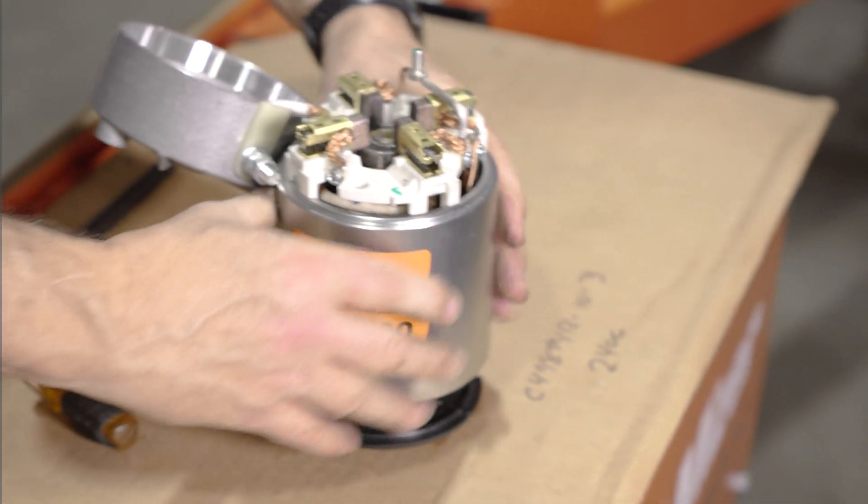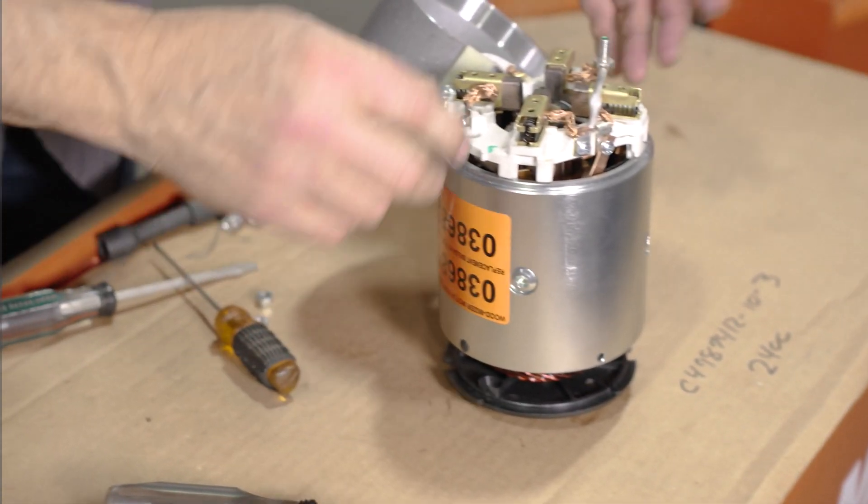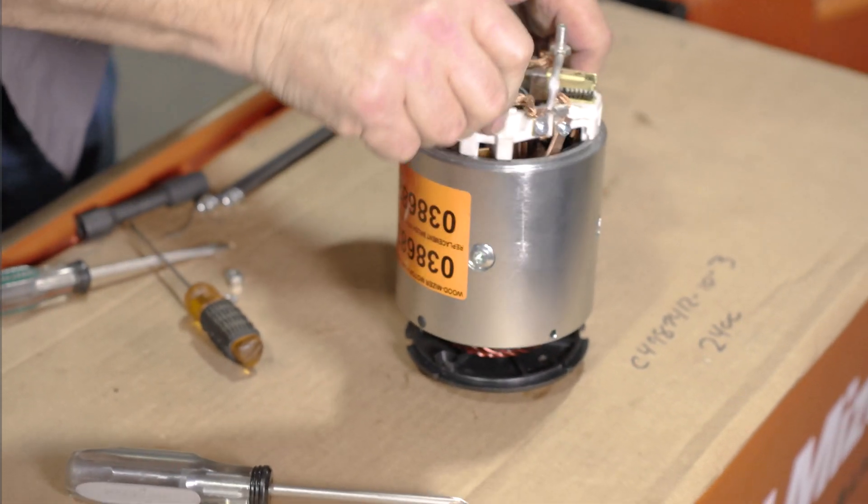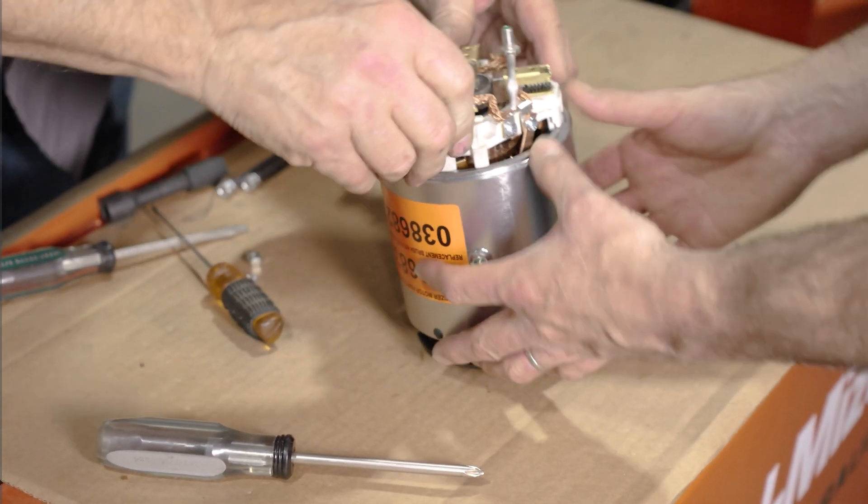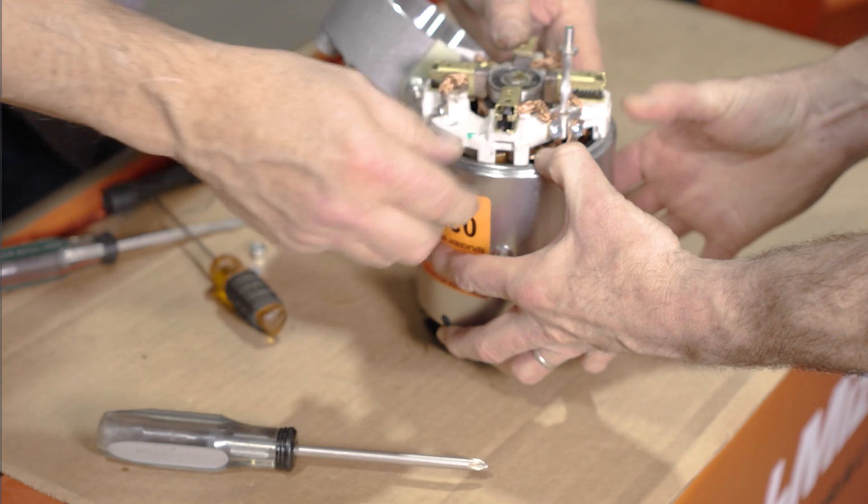When you put your motor casing down over your motor, your brushes are going to be sticking in so far that they're going to be in the way. So you want to push those back, and that one kind of slipped out a little bit.